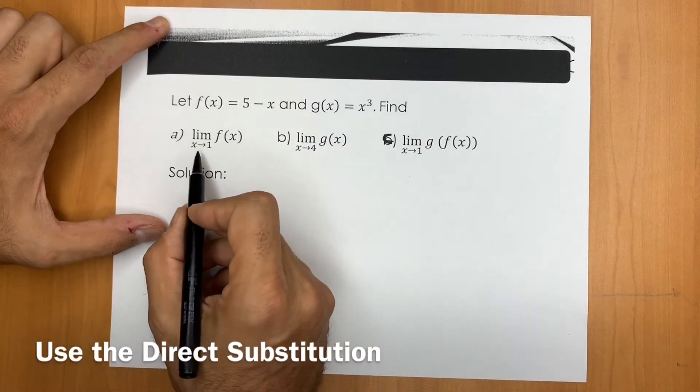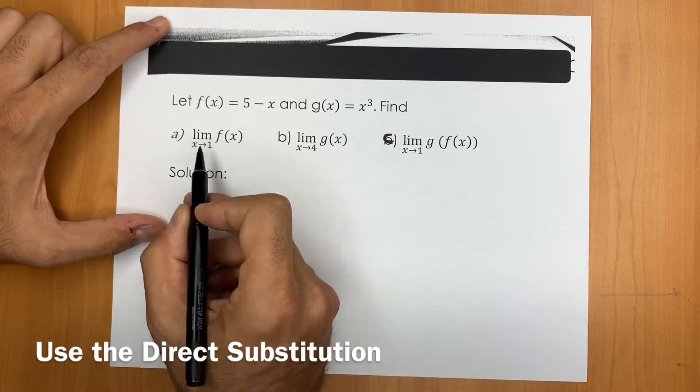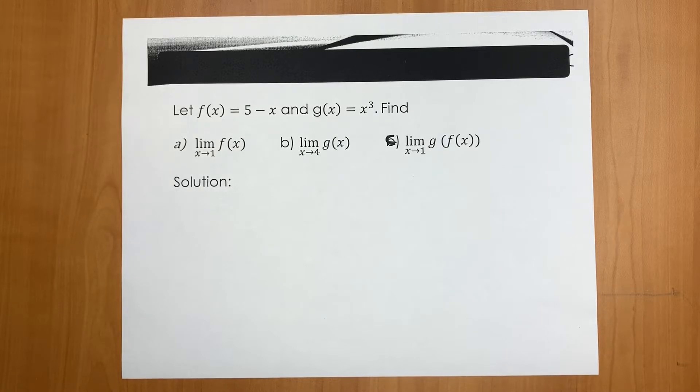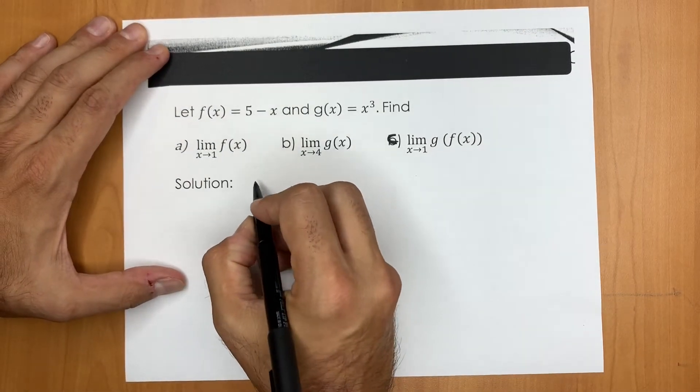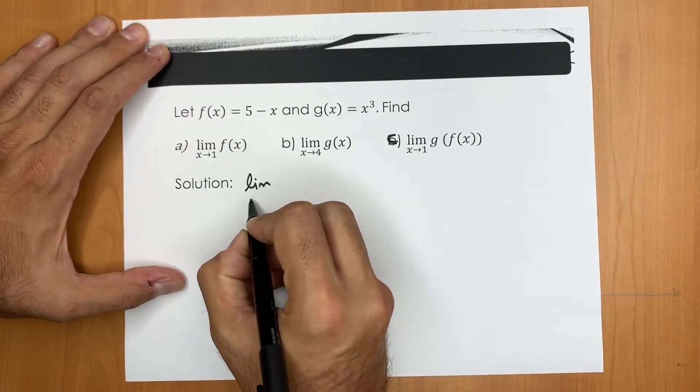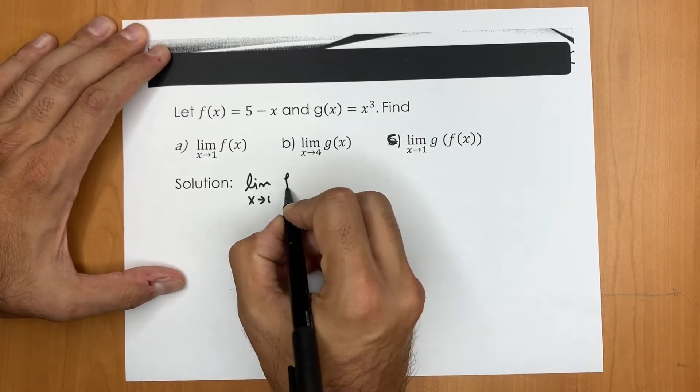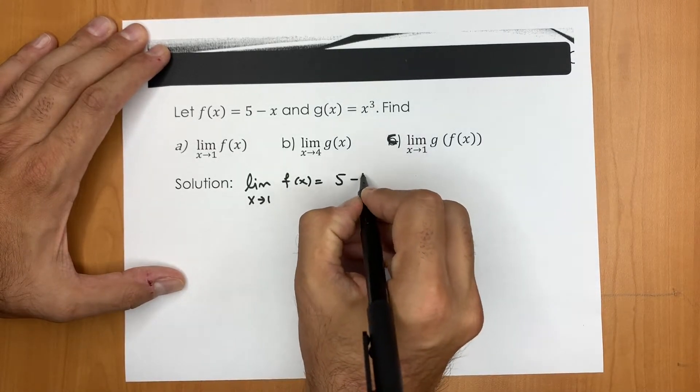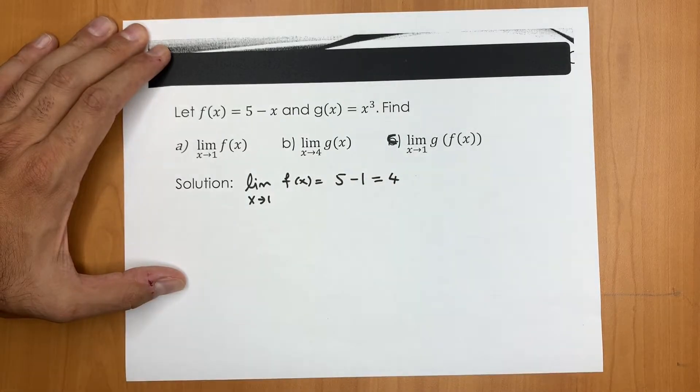First off, we're trying to find the limit of f at x equals one. Well, f is a polynomial, and we can find the limit by using direct substitution that follows from limit properties of polynomials. So for that reason, the limit of f at x equals one would be five minus one, that is equal to four.